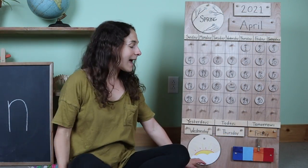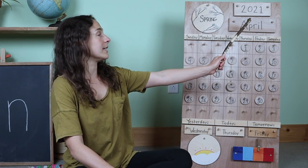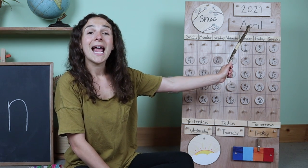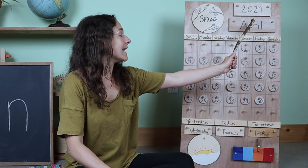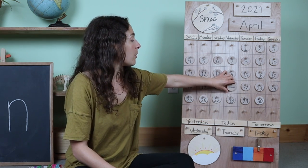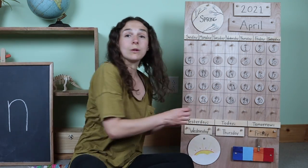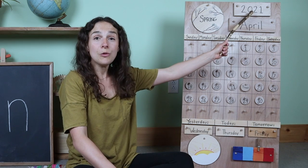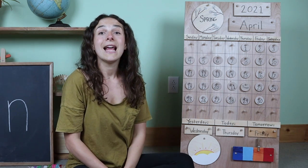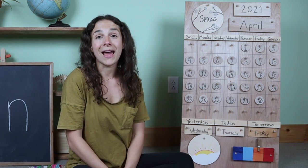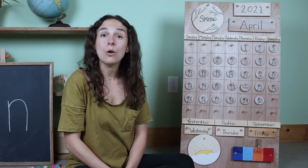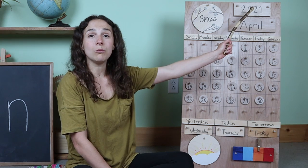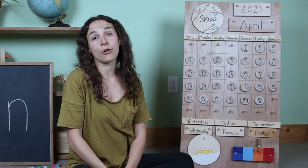So let's get started with the calendar and the weather chart. I have my pointing stick and I'm going to put it up to the top to where the month is. Do you know what the month is? April. That's right. And today is April 22nd. I am going to move the chip over from yesterday. Yesterday was April 21st and today is April 22nd, 2021. Will you say the date one more time with me? Today is April 22nd, 2021. Both ways are correct when saying the year.